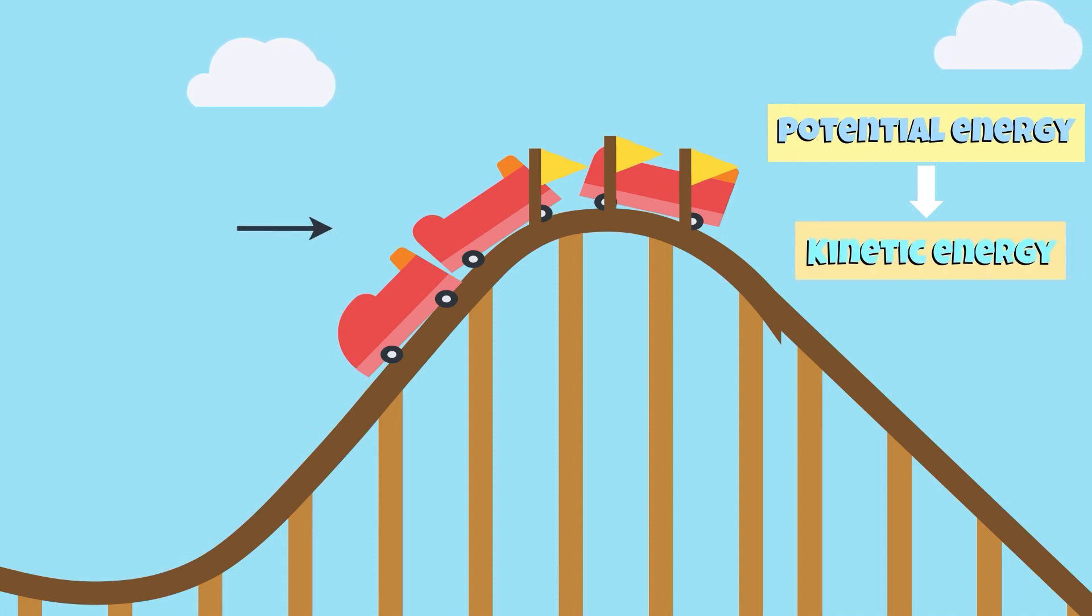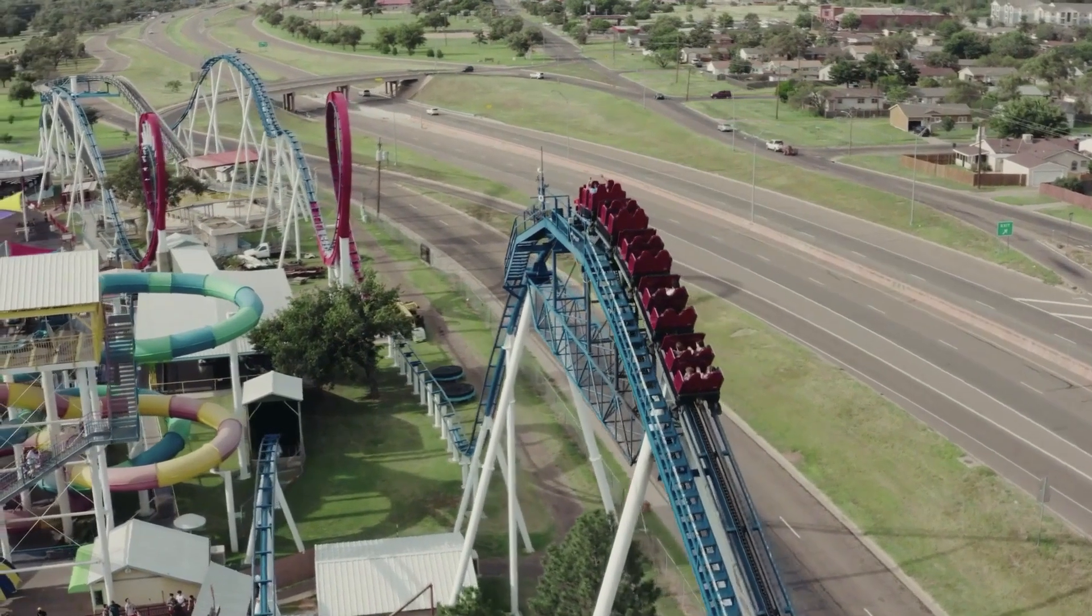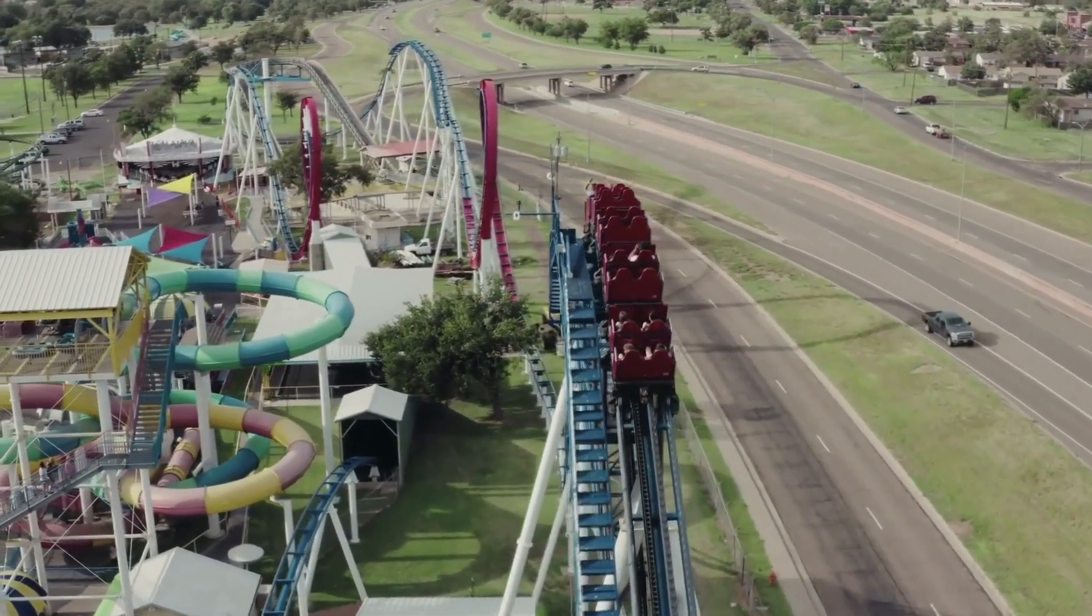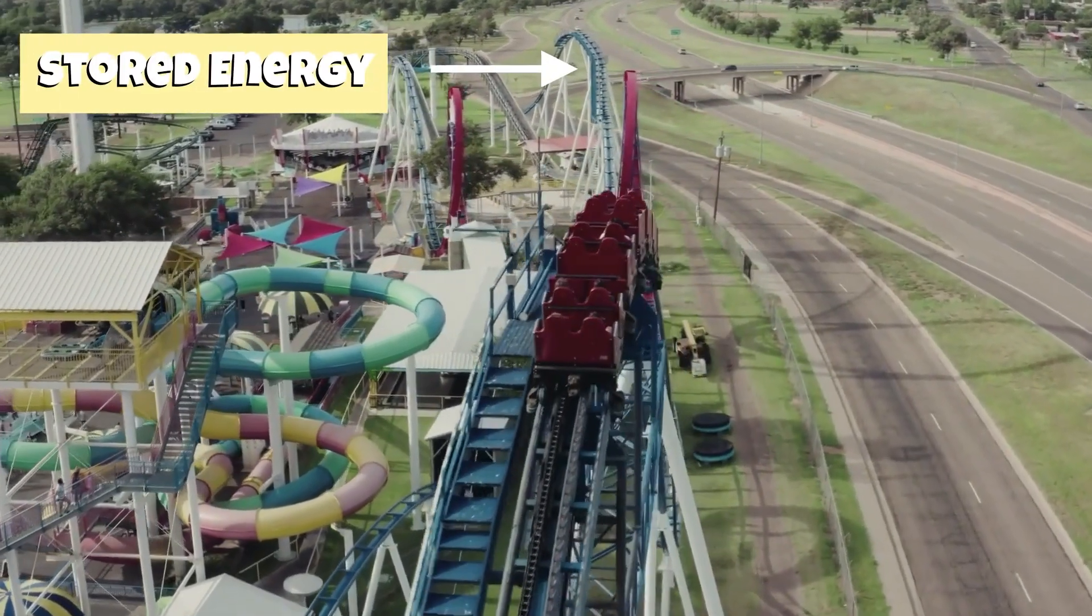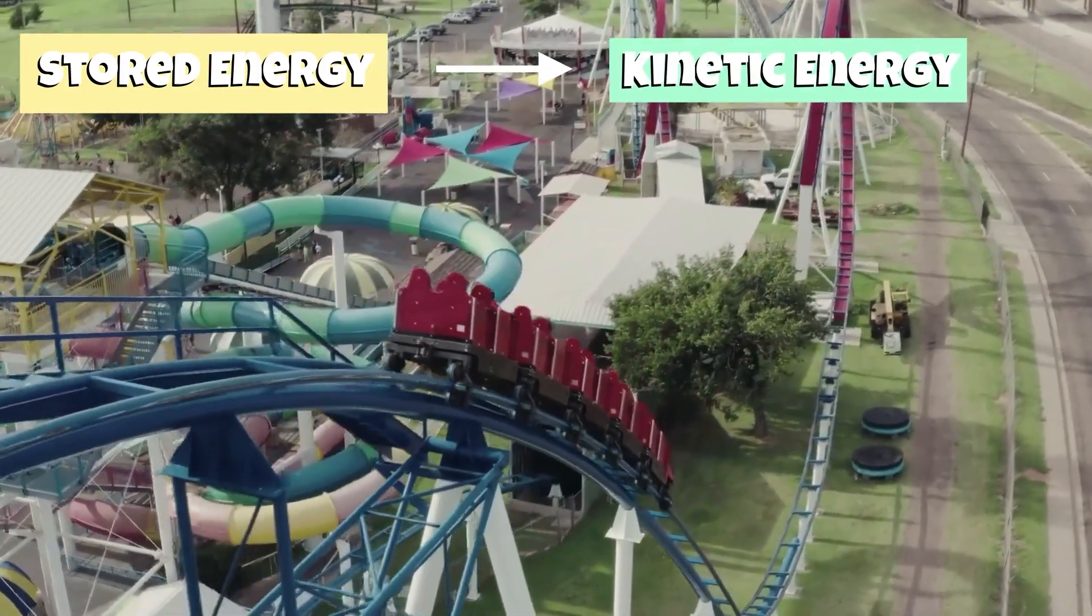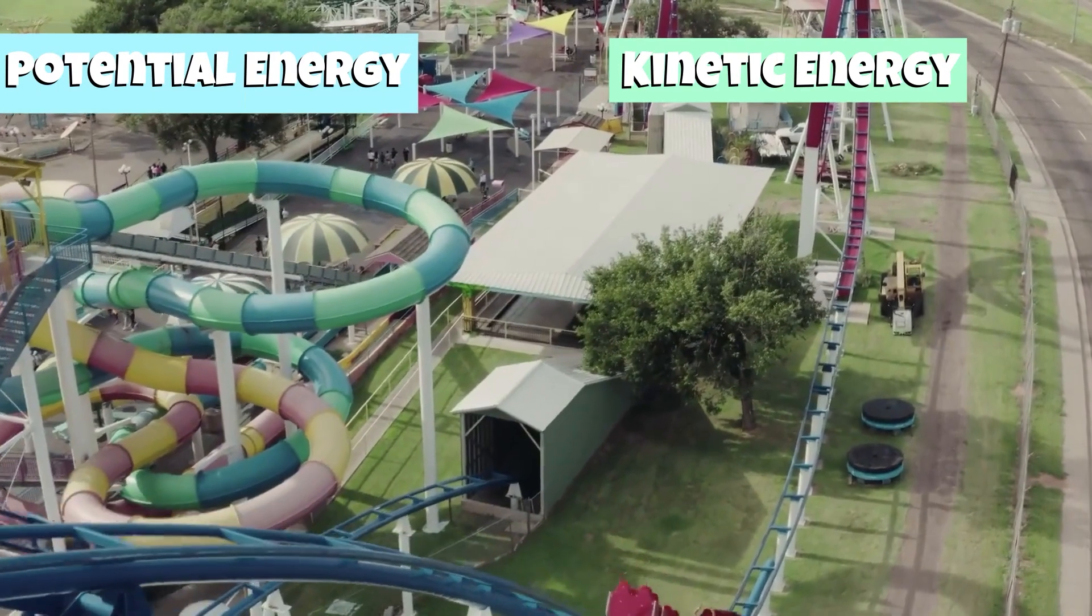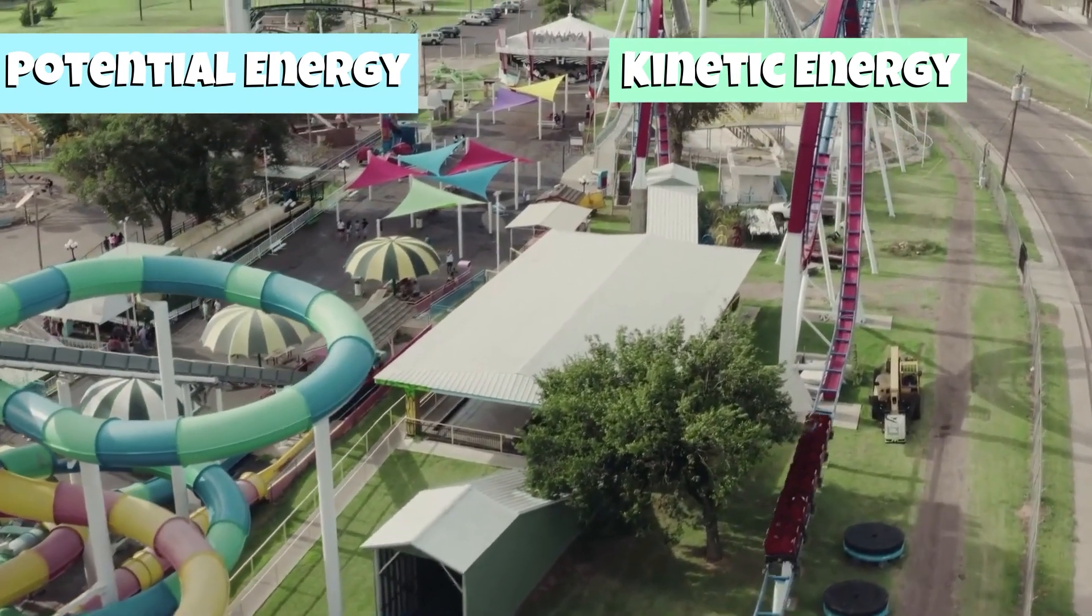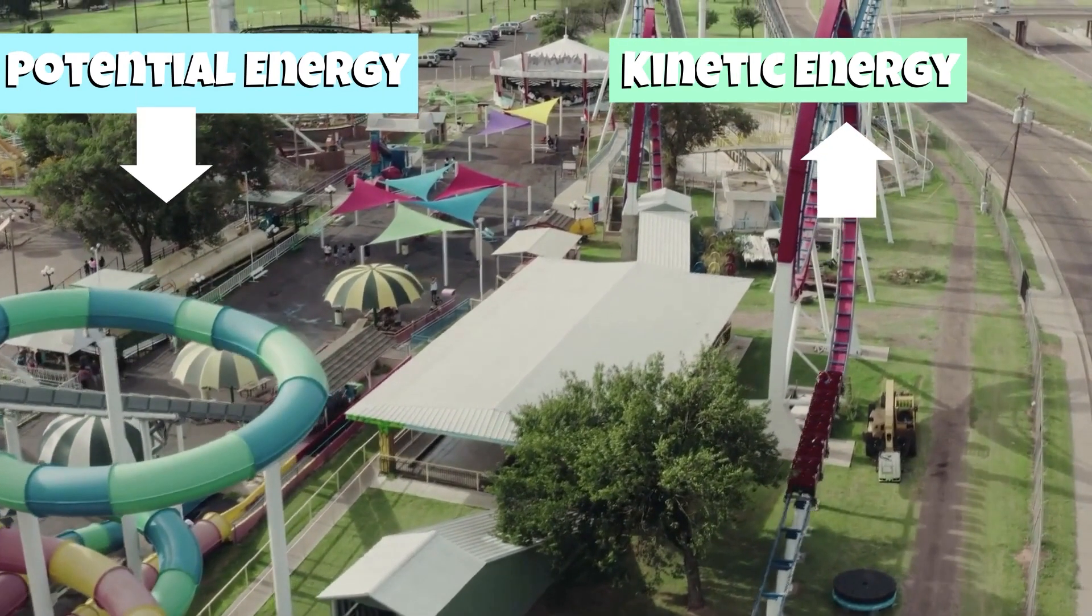The roller coaster, as it starts from rest at the top, has the most potential energy. When the roller coaster is released and begins to be pulled down by gravity, its stored energy is transformed into kinetic energy. As the roller coaster goes down the hill, its kinetic energy increases, while its potential energy decreases.